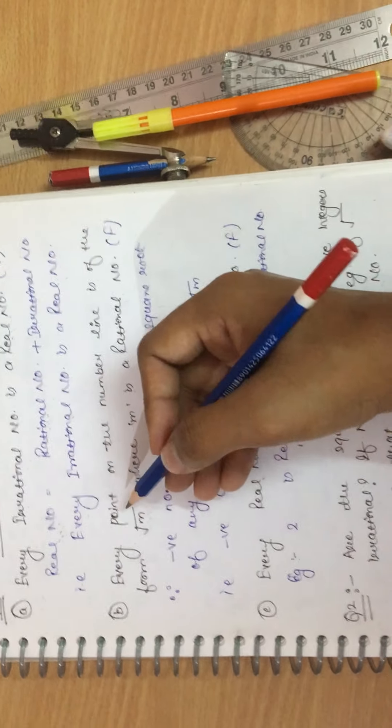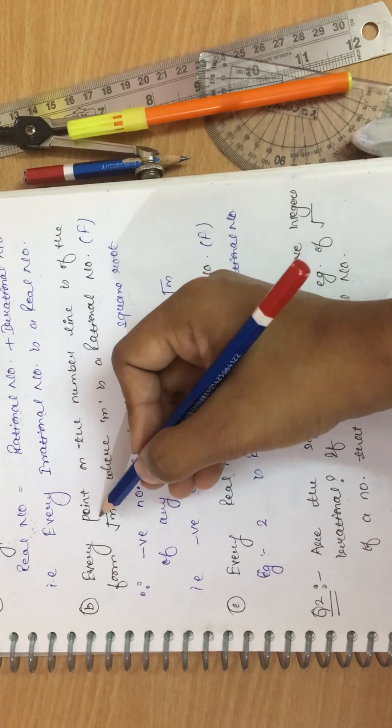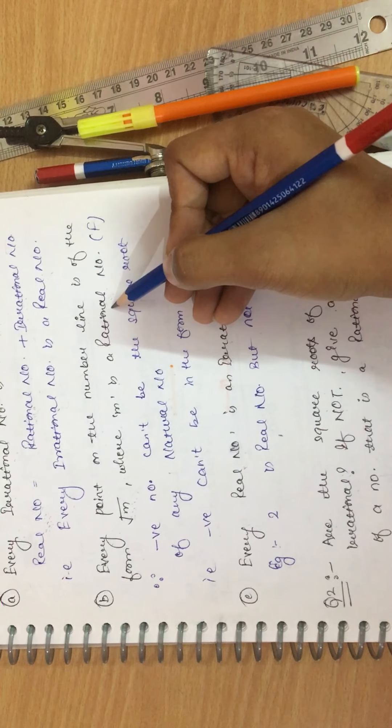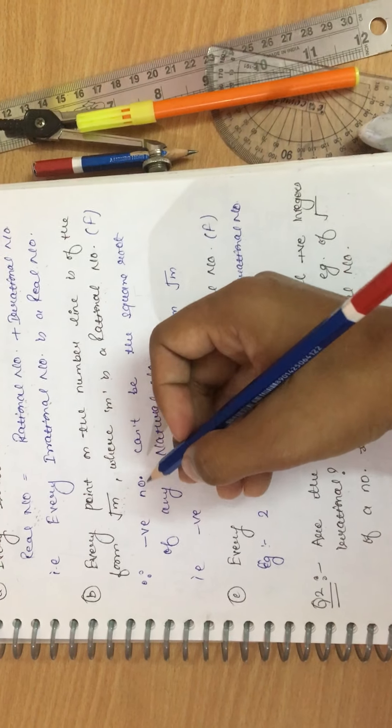First statement says that every irrational number is a real number. Definition of real number says that rational or irrational mixture is a real number. So we can say that all irrational numbers are real numbers. Yes, of course.